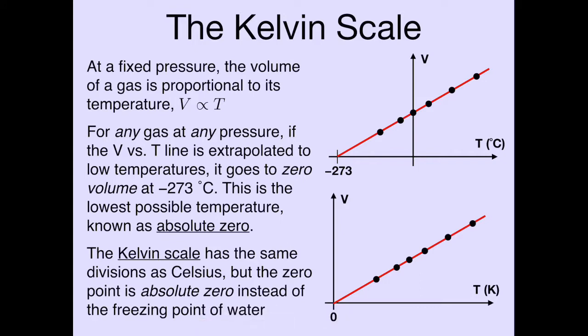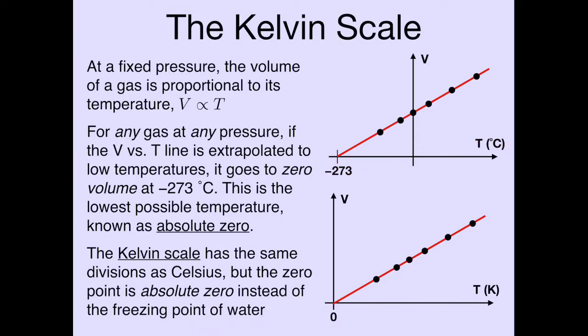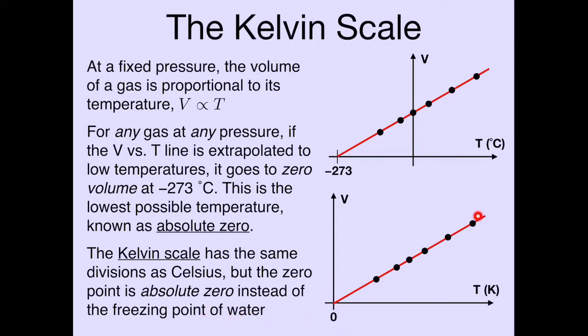That's where the Kelvin scale comes in. The Kelvin scale has the same divisions as Celsius — there are still 100 increments between the freezing and boiling points of water — except we set the zero point of the scale to be absolute zero. The Celsius and Fahrenheit scales can go negative, but in the Kelvin scale temperatures can't go negative. When we say zero Kelvin, we're talking about absolute zero, the lowest point you can get. Everything above that is some positive temperature in the Kelvin scale.